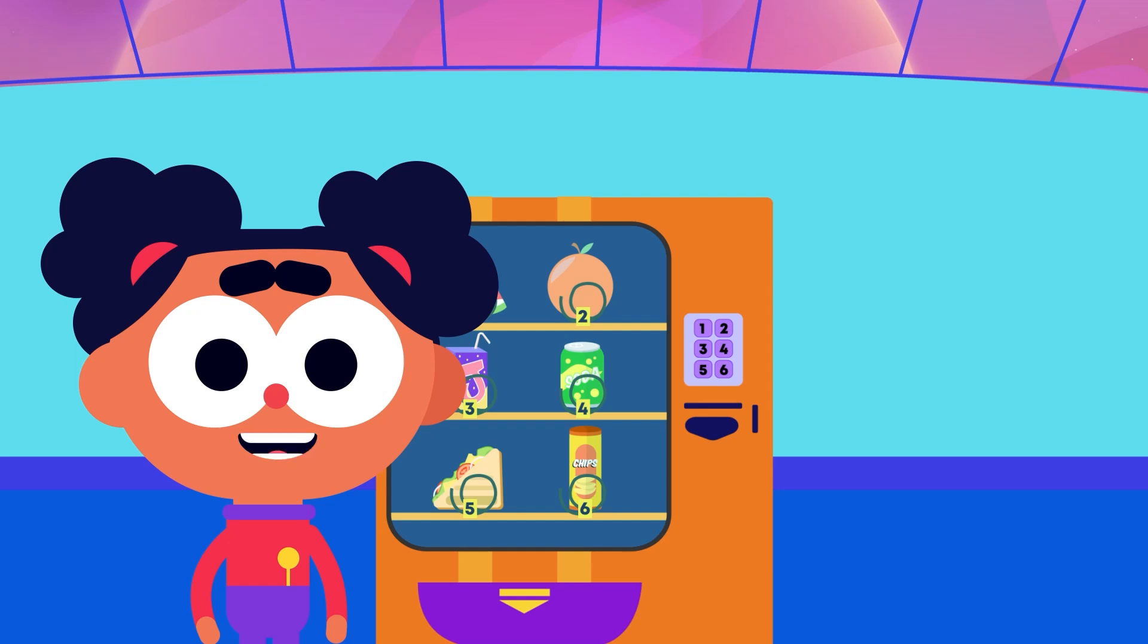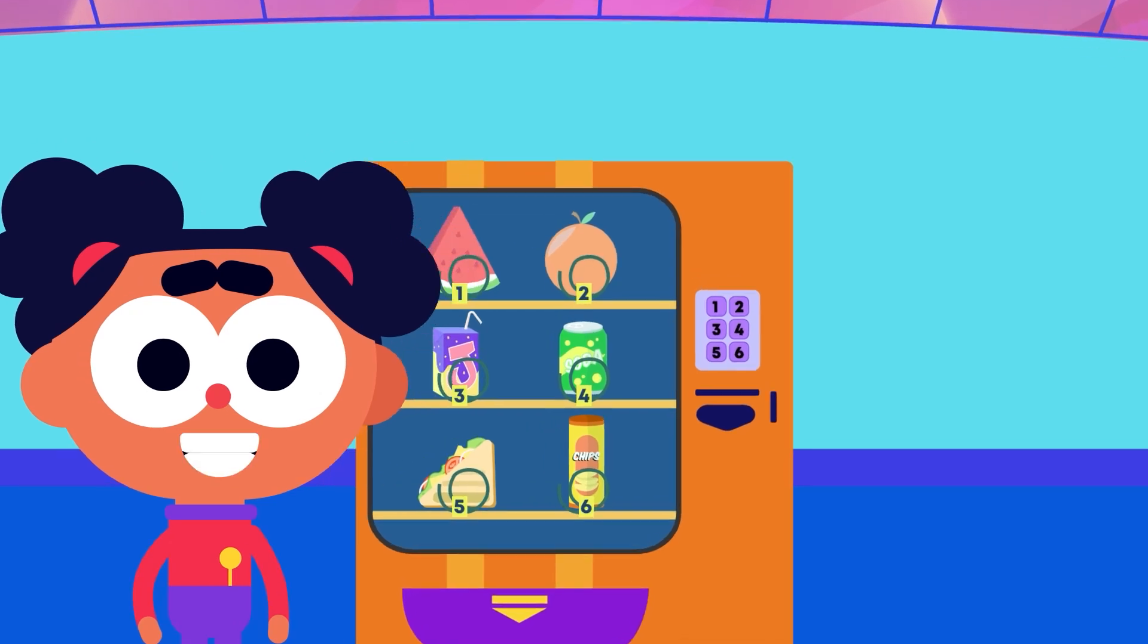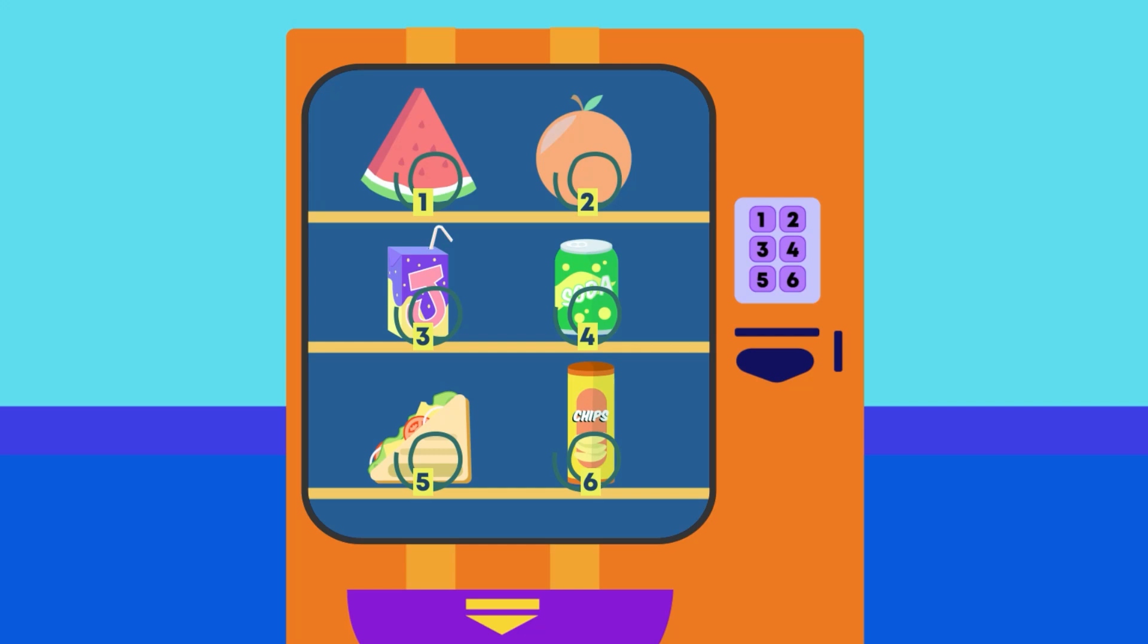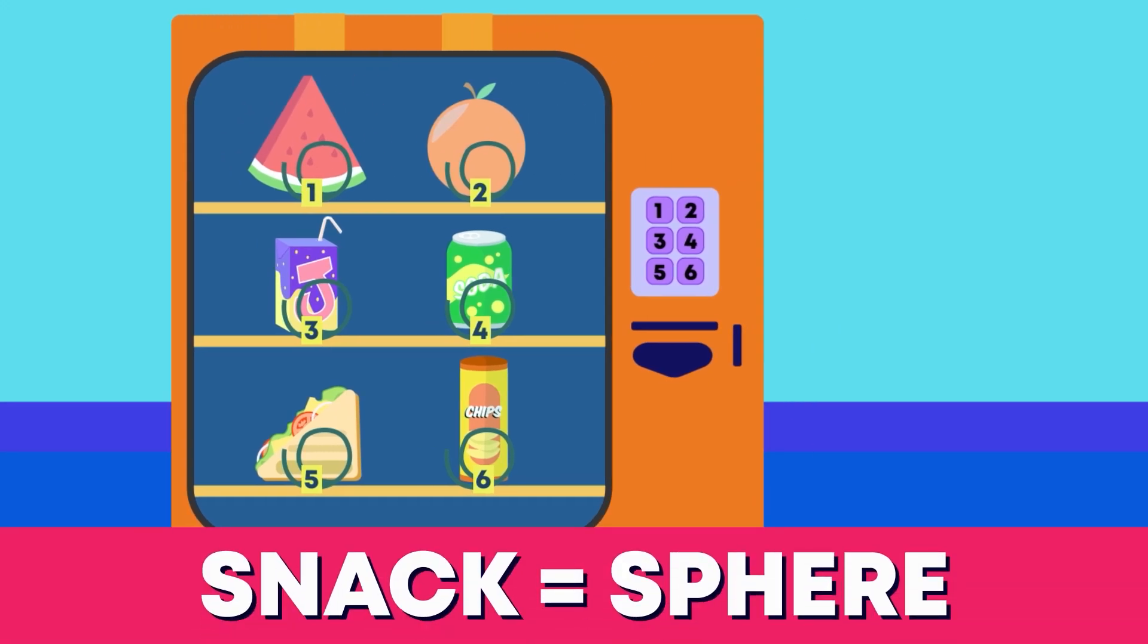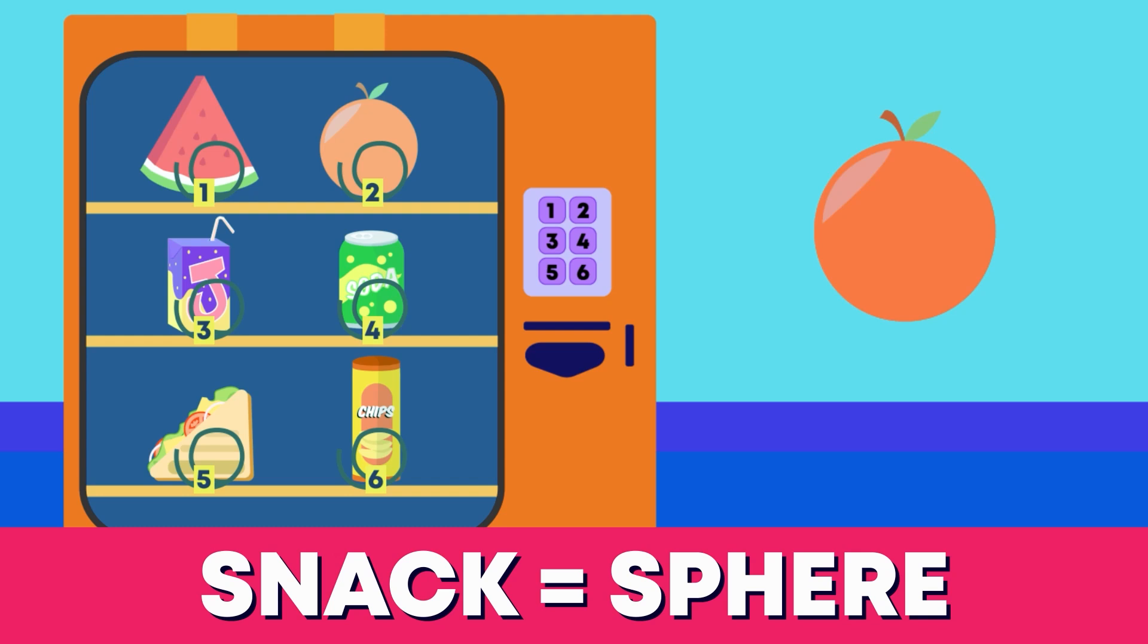Let's take a look at some more 3D shapes inside this vending machine. Which snack is a sphere? The orange is a sphere. Well done!